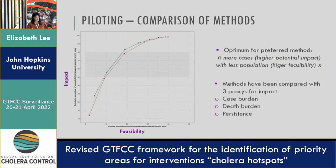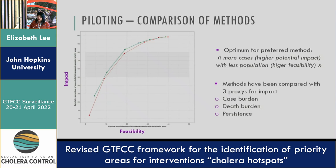Along the y-axis we have a few different proxies for impact: potential coverage of case burden, potential coverage of mortality burden, and persistence. We used this basis of evidence to compare the different indicators as well as the different index measures that would be used.